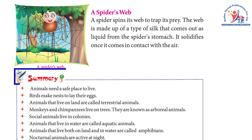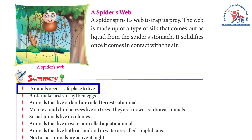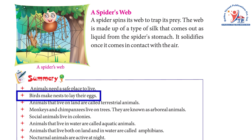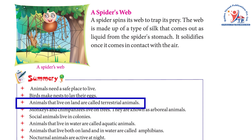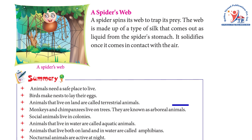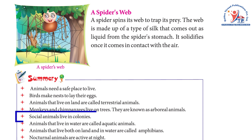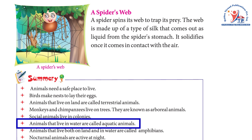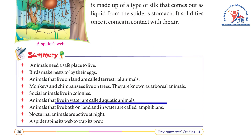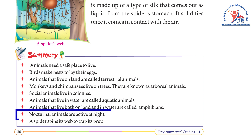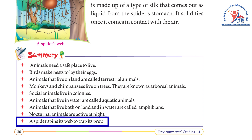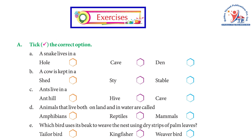Summary: Animals need a safe place to live. Birds make nests to lay their eggs. Animals that live on land are called terrestrial animals. Monkeys and chimpanzees live on trees and are known as arboreal animals. Social animals live in colonies. Animals that live in water are called aquatic animals. Animals that live both on land and in water are called amphibians. Nocturnal animals are active at night. A spider spins its web to trap its prey.